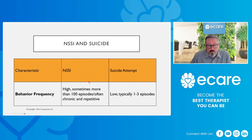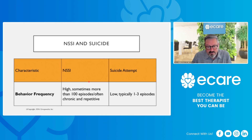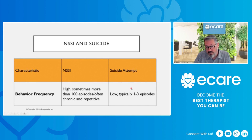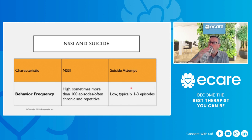Regarding behavior frequency: non-suicidal self-injury tends to be a high-frequency behavior, sometimes more than a hundred episodes, often chronic and repetitive. We'll talk more in a few minutes about how non-suicidal self-injury progresses. A suicide attempt would be considered a lower-frequency behavior, typically one to three episodes in a lifetime on average.